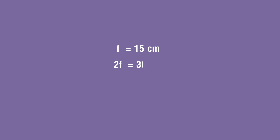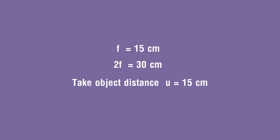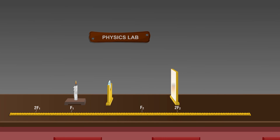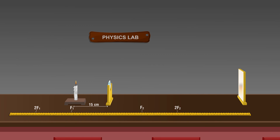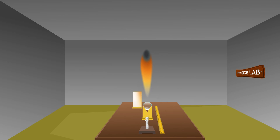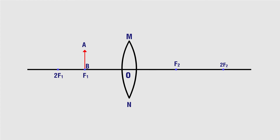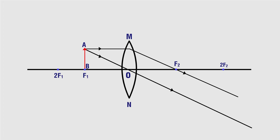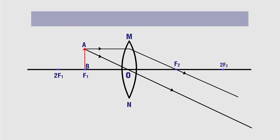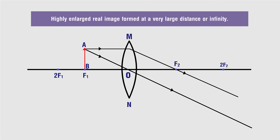Case 4 — object at f1: Since f1 is at 15 centimeters, the object distance equals 15 centimeters. Place the lighted candle at the focus f1 and move the screen back and forth — no image will be obtained on the screen. Remove the screen and observe a highly enlarged but blurred image formed on the wall at the end of the room. In the ray diagram, parallel rays are formed which do not intersect, so the clear image forms only at infinity. A real, inverted, and highly enlarged image is obtained.